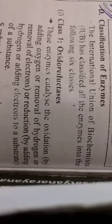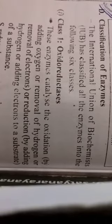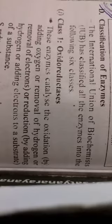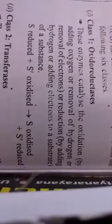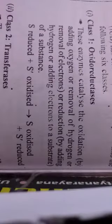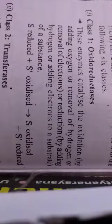Oxidoreductases carry out oxidation-reduction reactions. In this case, either oxygen is added or hydrogen is removed, or electrons are removed, or reduction will occur. So the reduced substrate becomes oxidized, and the oxidized substrate becomes reduced. This is the function of this enzyme.